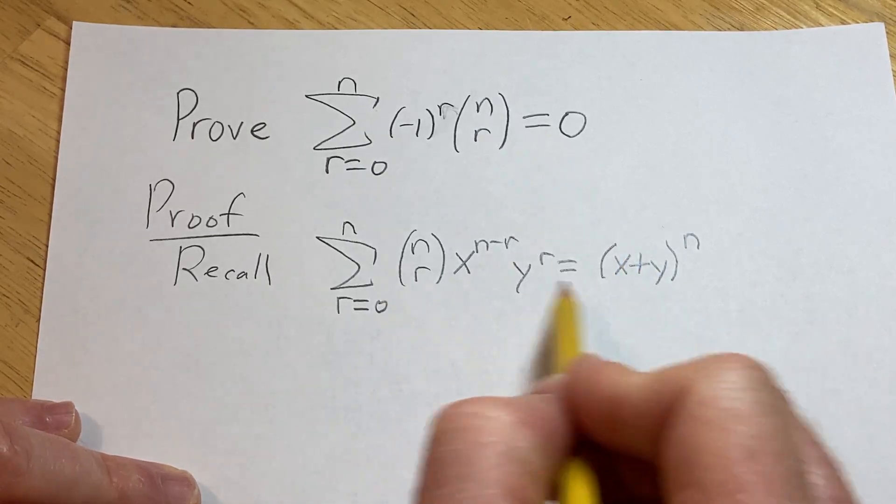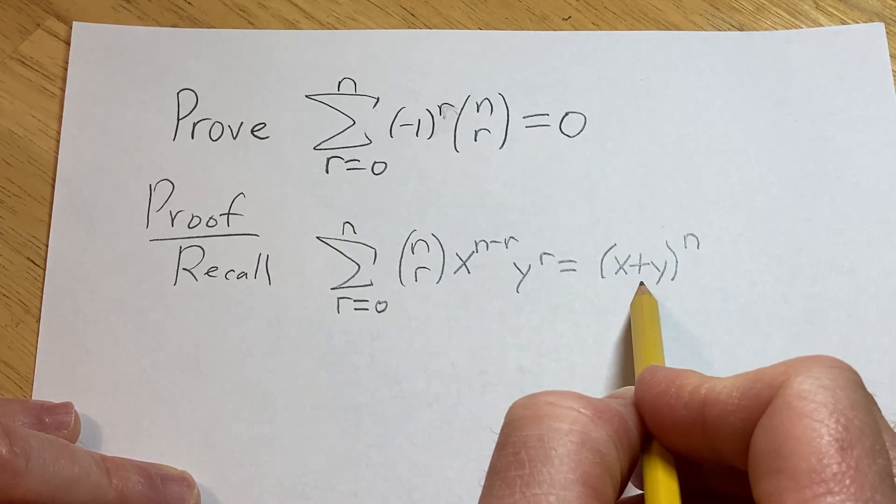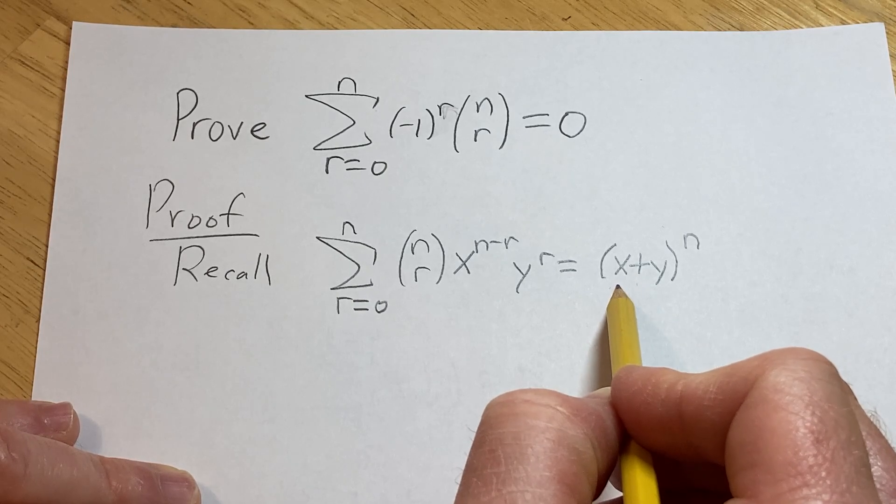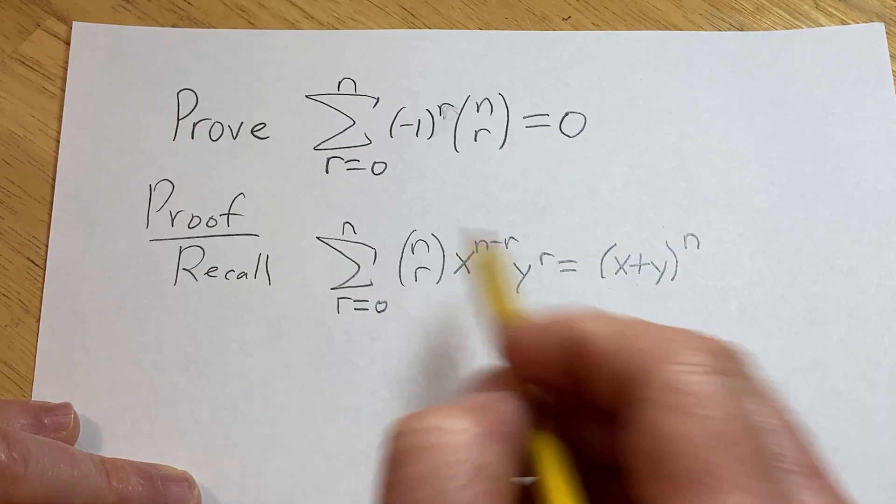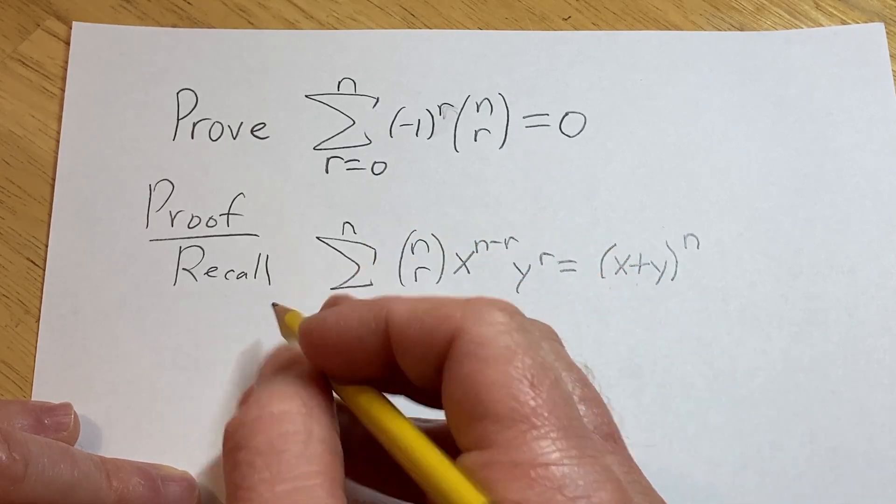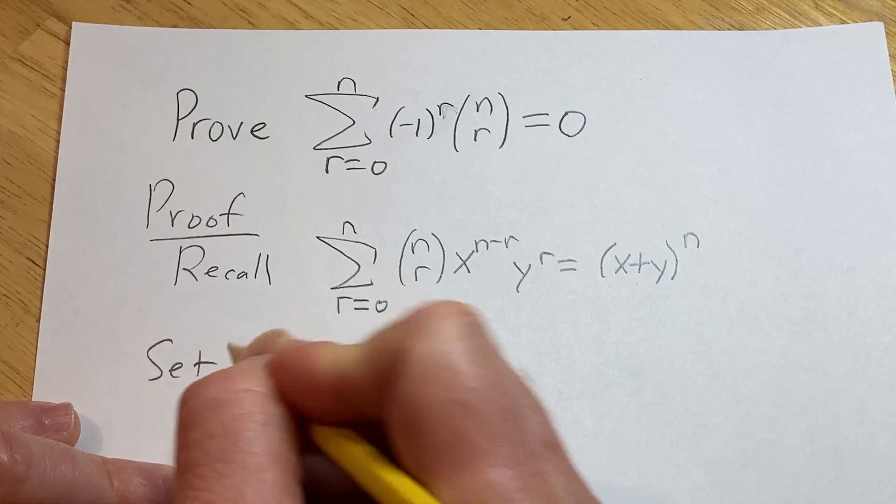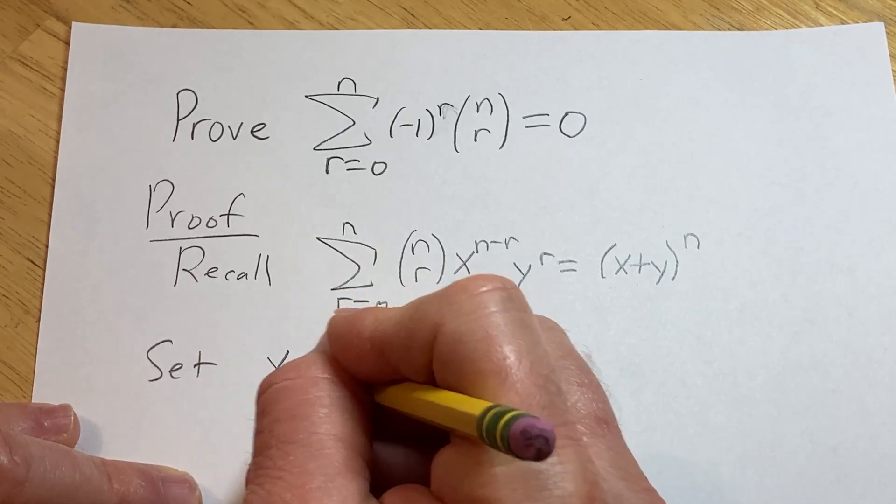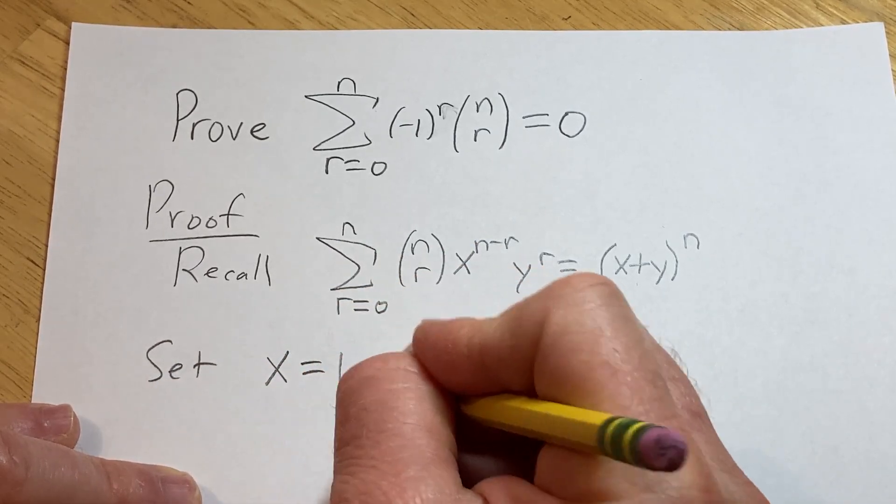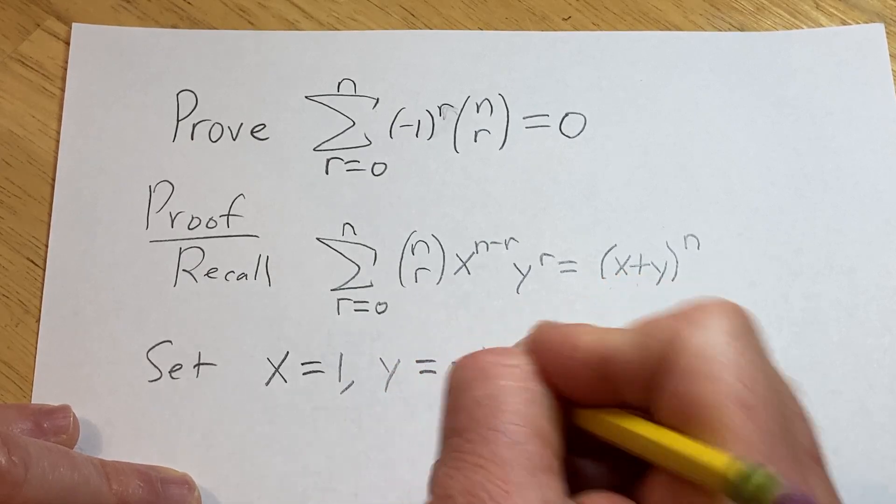And so in order to get 0 over here, basically we just set x equal to negative y. So basically, maybe we can just do something like this, set x equal to 1 and y equal to negative 1.